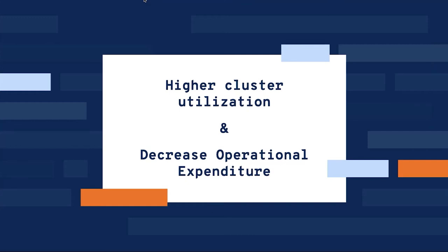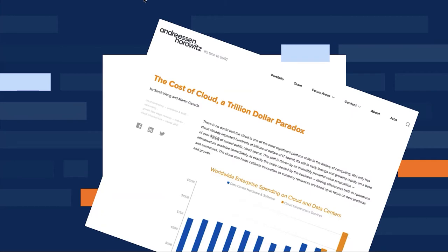The premise for this talk is that we want higher cluster utilization with decreased operational expenditure. We're using inefficient technologies and trying to target ways to increase the number of deployments using existing infrastructure, without having to scale vertically or horizontally by purchasing more machines. We also target services running on limited resources, so we want to better utilize those limited resources. This is described in an article by Sarah Wang and Martin Casado called "The Cost of the Cloud: A Trillion Dollar Paradox."